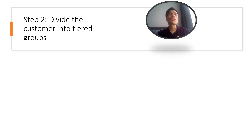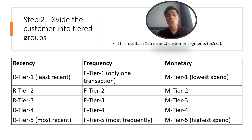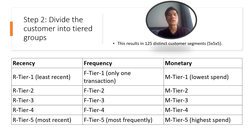Step two: divide the customers into tiered groups. Divide the customer list into tiered groups across each of the three dimensions — R, F, and M. SPSS automatically divides these into five tiers per dimension. With five tiers each, you get 5×5×5 = 125 distinct customer segments. In recency, tier one is least recent and tier five is most recent. In frequency, tier one has the fewest transactions and tier five is most frequent. In monetary, tier one is the lowest spend and tier five is the highest spend.